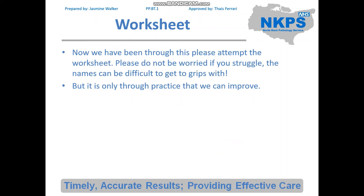Now we've been through this, please attempt the worksheet. I'd suggest either finding this PowerPoint on QPulse or going back and pausing at the specific points where the tables appear, as they will really help you work out the number for each antigen blood group — or you can go to the ISBT website, which I'll have in the description box below. Please don't worry if you struggle; it's very difficult to get the hang of this initially, but once you do it will be a really useful skill. Pause the video now.